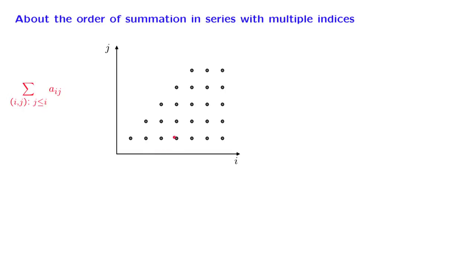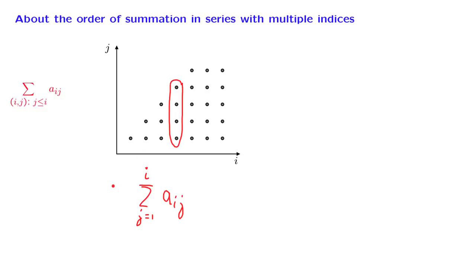We can carry out this summation in two ways. One way is to fix the value of i and consider all the corresponding terms for different choices of j, but only up to the point where j equals i. So we take the coefficients a_ij and add over all j's starting from 1 up to j equal to i. We do this for every value of i, getting a number for each column, and then we add those numbers together as i ranges from 1 to infinity. This is one way of carrying out the summation.